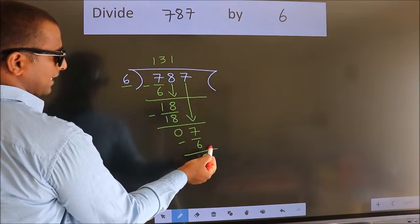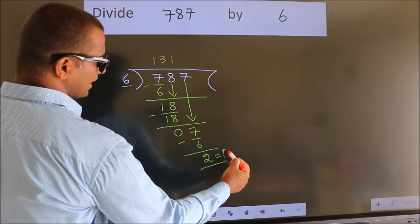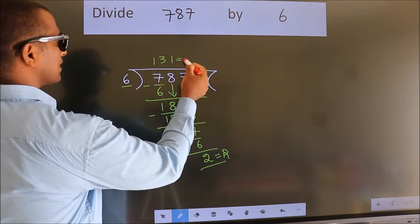No more numbers to bring it down. So, we stop here. This is our remainder. This is our quotient.